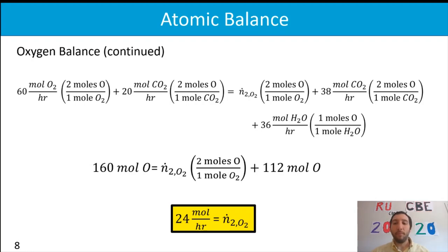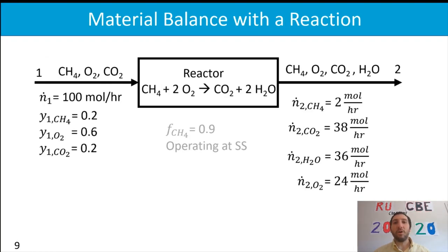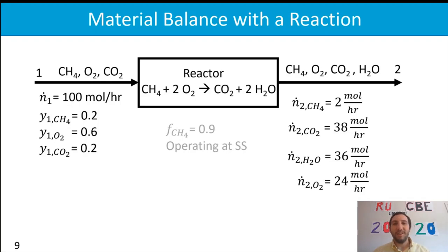Putting it all together and going back to our original diagram, we have now used the atomic balance to solve for all unknown values in stream two. It does take some time to track where all the atoms are and which molecules contribute to each atomic component — you need to convert all molecular species into moles of a particular atom. Be aware it can take extra time, but the atomic balance will generally guarantee you the correct answer.